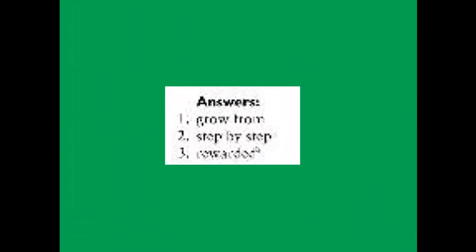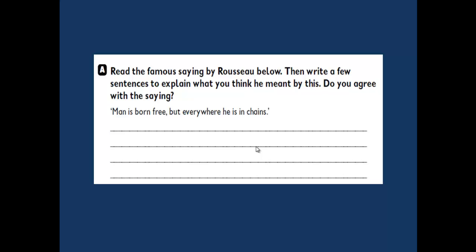Here are the answers also. The first one is grow from, the second one is step by step, and the third word is rewarded. Now let's do exercise number A on our workbook, page number 36, to conclude the lesson. The exercise says: read the famous saying by Russell below, then write a few sentences to explain what you think he meant by this. And finally, do you agree with the saying?